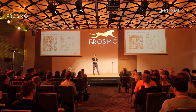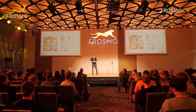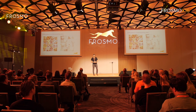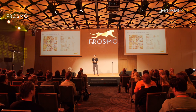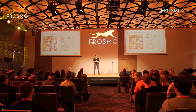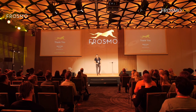Not everything is easy for a machine to recognize. For example, it's really difficult for a machine to differentiate between a chihuahua and a muffin, or a sheepdog and a mop — so there are limitations to this technology. Thank you very much.